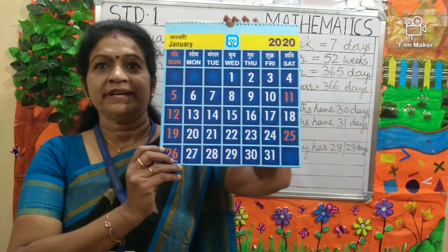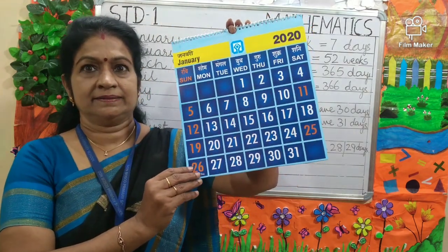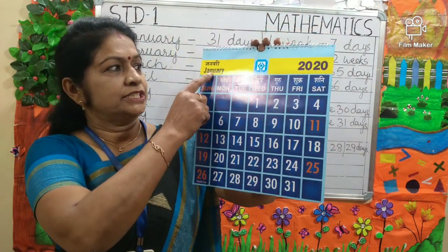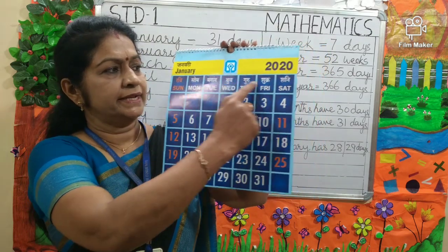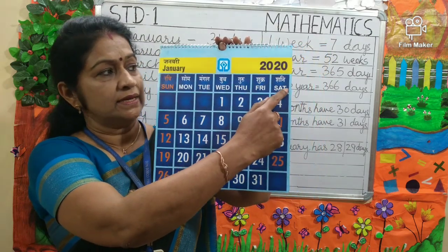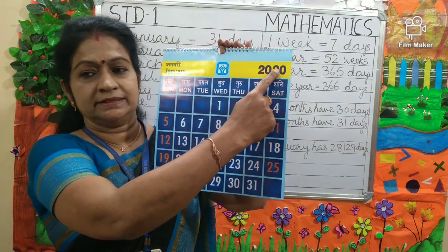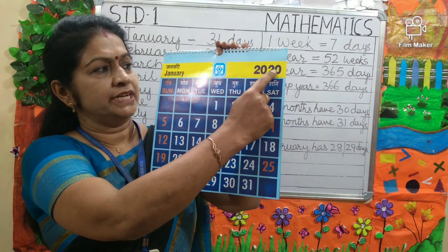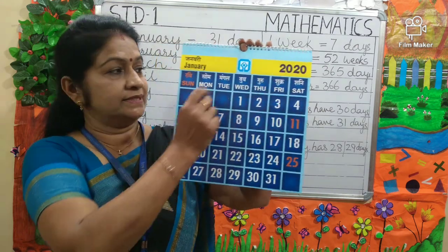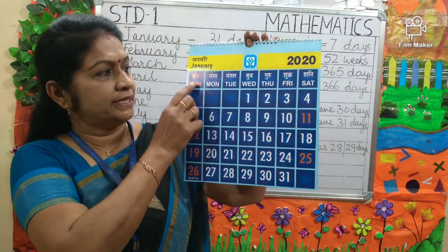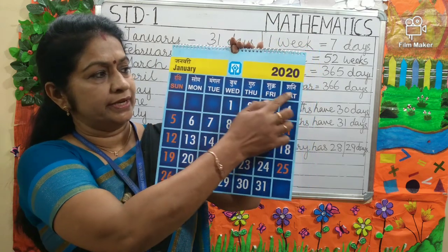Now here is a calendar. It shows the month and the days and the year. This year is 2020. Here are the days of the week.